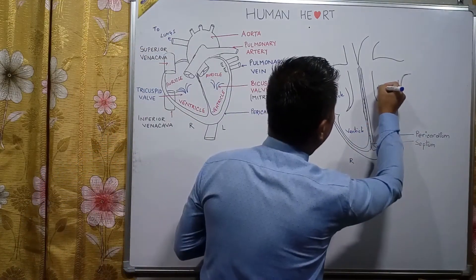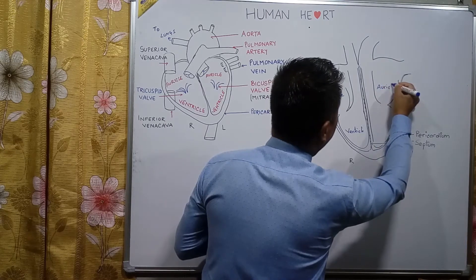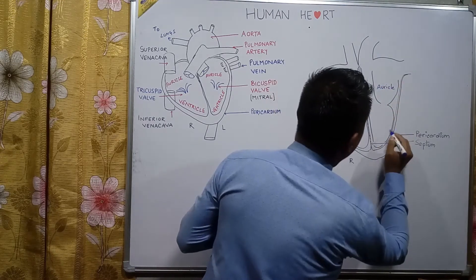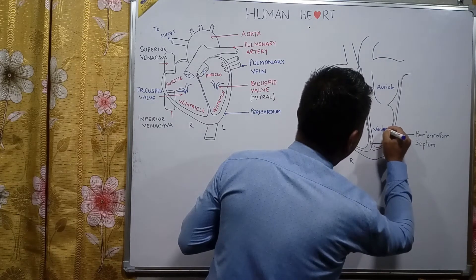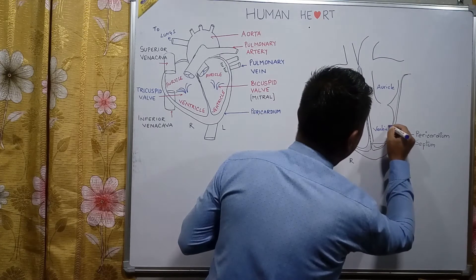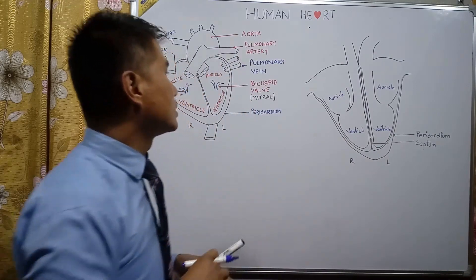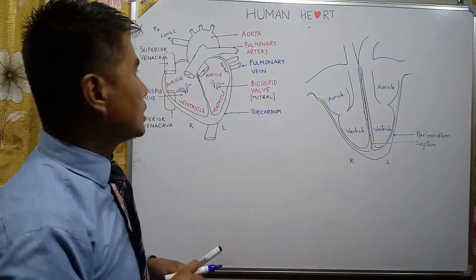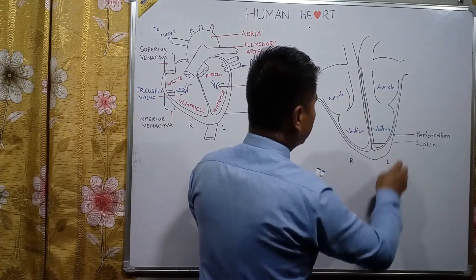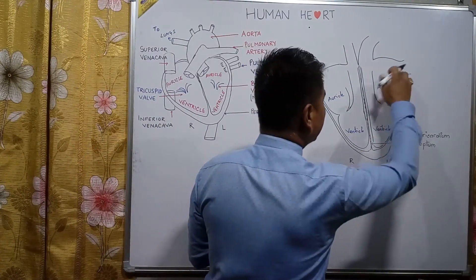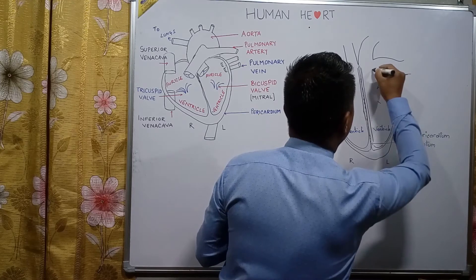Likewise, this also is an auricle and this is the ventricle on the left-hand side — so this is the left auricle and left ventricle.